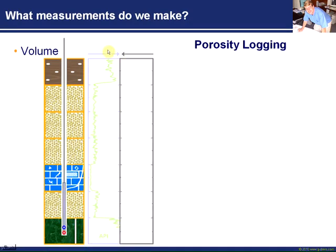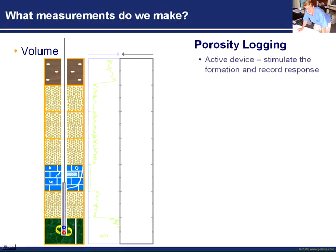By convention, increasing porosity is shown from right to left, so the higher the porosity, the curve appears on one side of the track and the lower the porosity, the curve appears on the other side. There are a number of different porosity measurements and I'm going to touch on three. These are generally active devices — these tools do something to the formation and measure a response. They're not passive devices just listening; they actually stimulate the formation and measure the response to that stimulus.